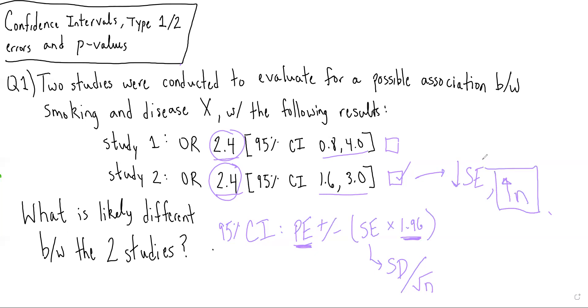So an assumption that can be made in this case, given that the two studies had the same point estimate, but study two had a much narrower confidence interval, is that study two has a larger sample size.